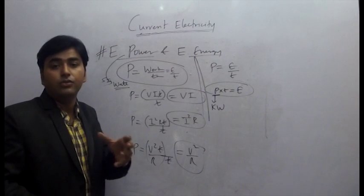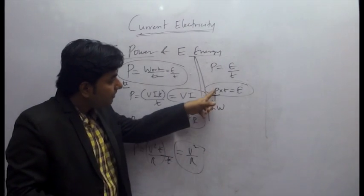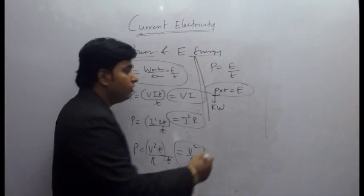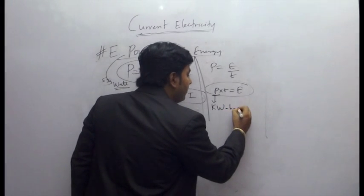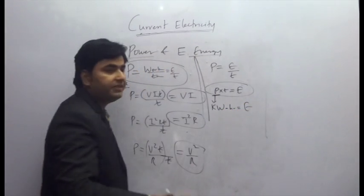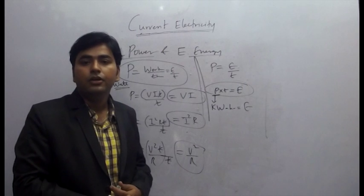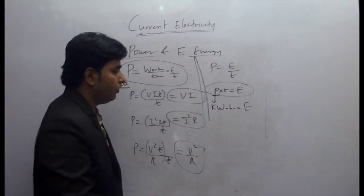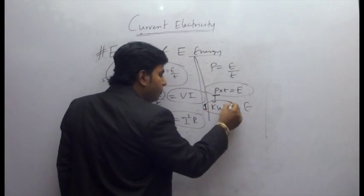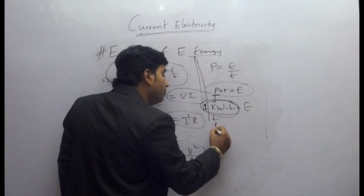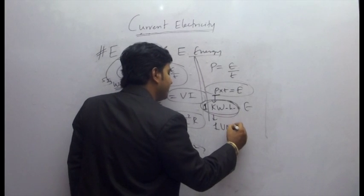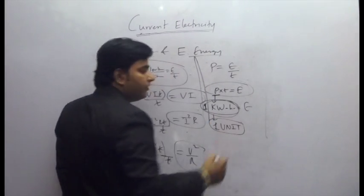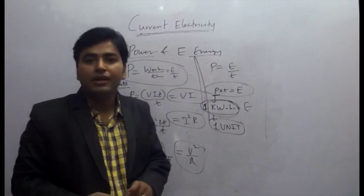If power is in kilowatt and time is in hours, that is a standard unit by which electric energy is measured. And one kilowatt-hour is termed a unit. So if next time we have an electricity bill, you can see how many units consumed - that means how many kilowatt-hours of energy we have consumed.